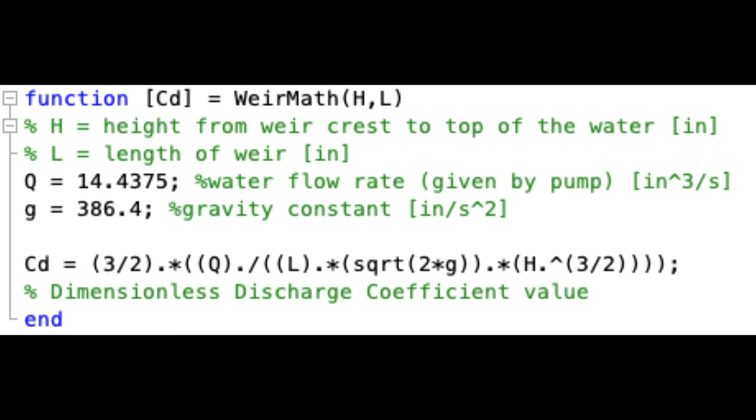Using basic algebra to solve for the discharge coefficient, we wrote a MATLAB script that would solve for any coefficient given the length of the weir and the height H above the weir.